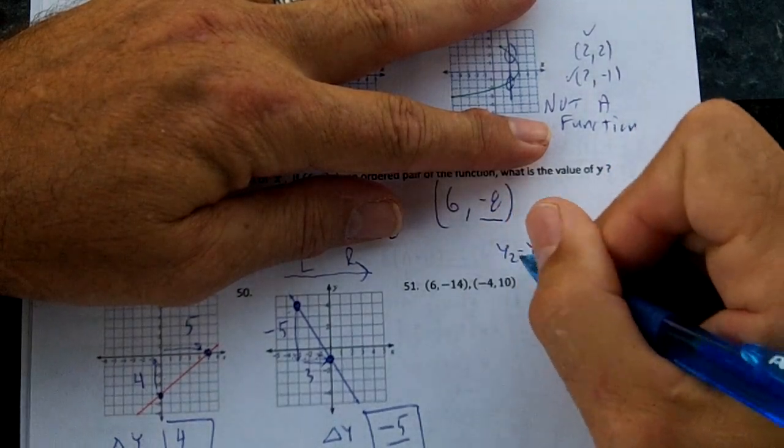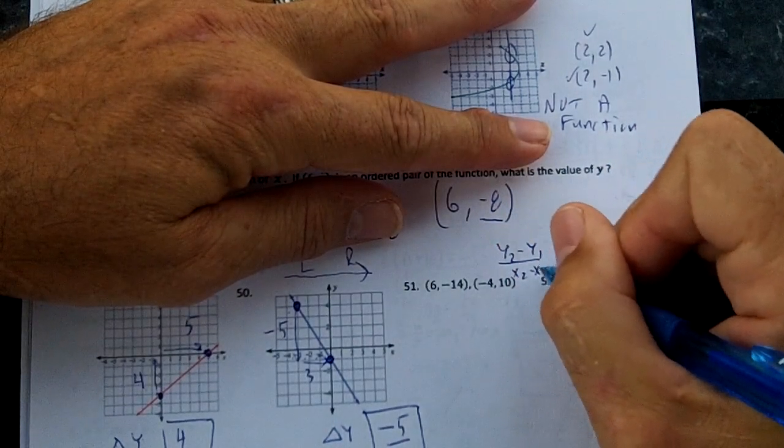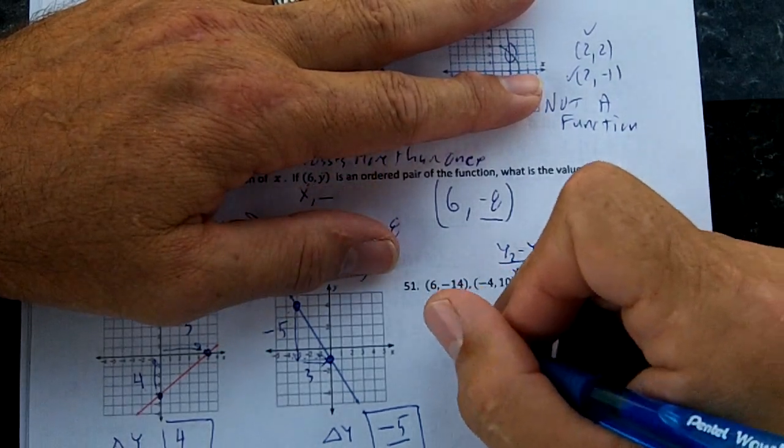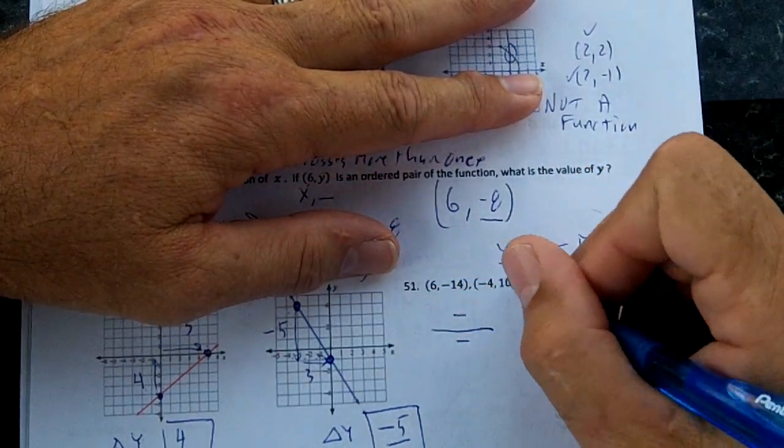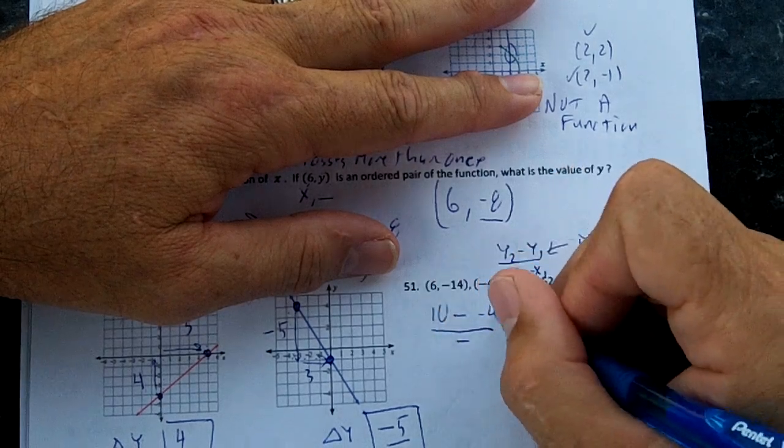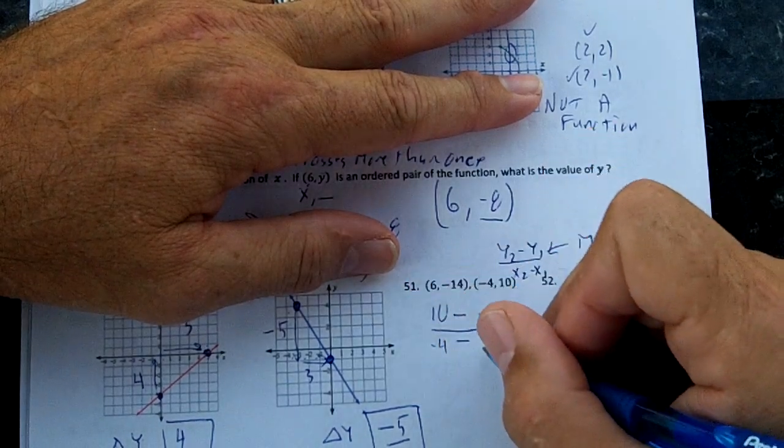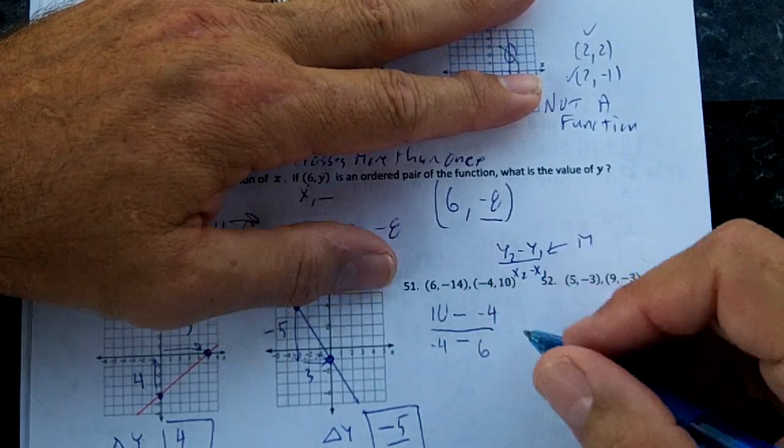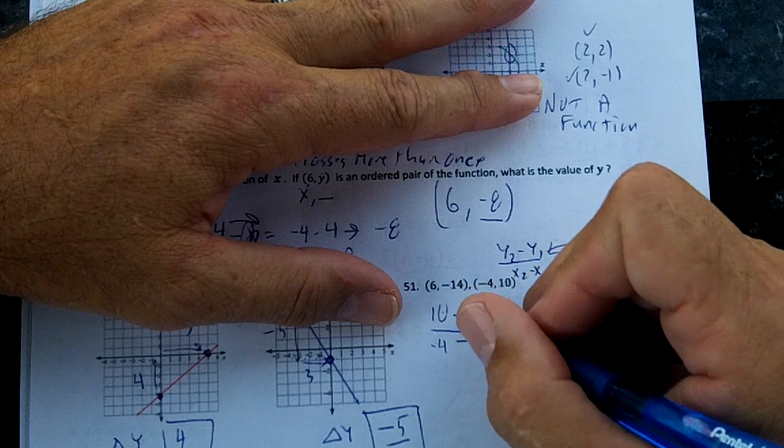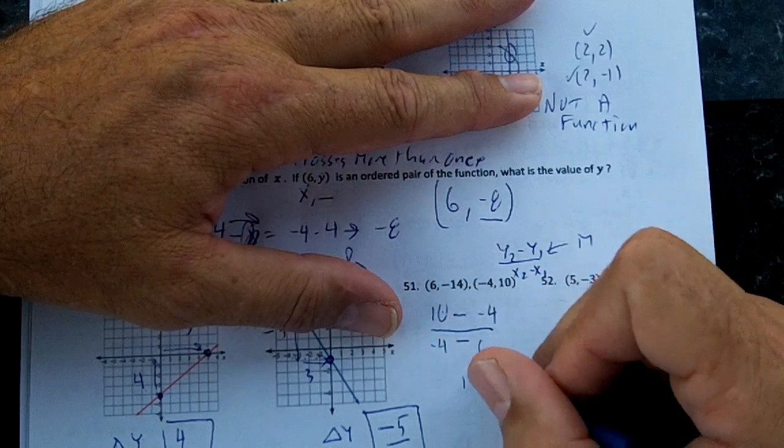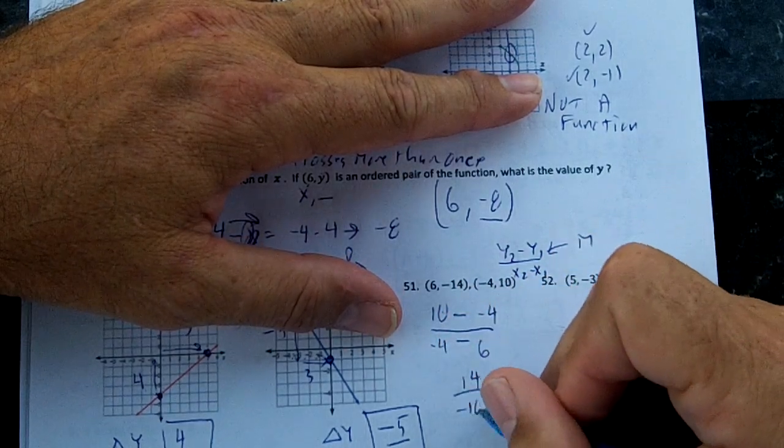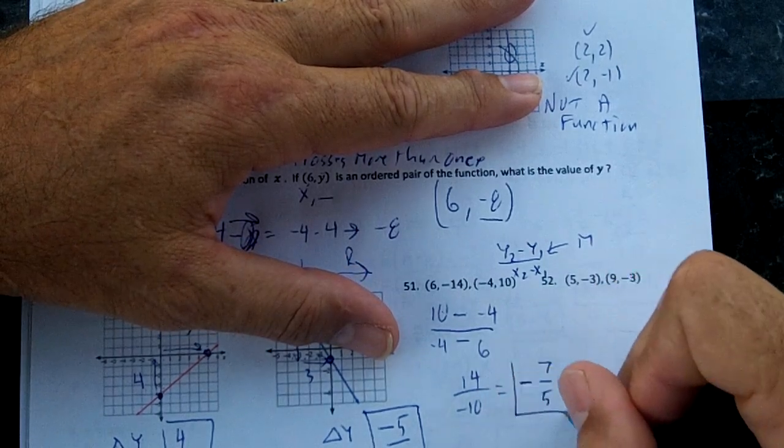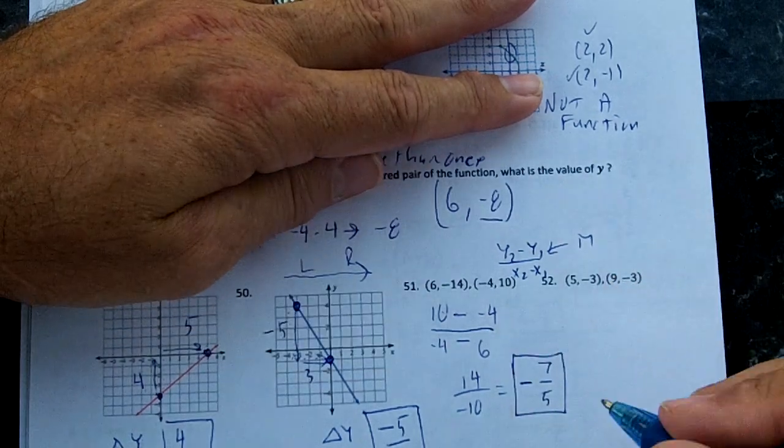Right here we're going to do Y2 minus Y1 over X2 minus X1, which is your slope formula. You did this over and over in 8th grade. So draw a fraction bar. Put two minuses. 10 minus negative 14 over negative 4 minus 6. Your Y2s go here. Your second point goes here. Your first point goes here. 10 minus a negative 14. These two negatives make a plus. 10 plus 14 is 24 over negative 10. And that's going to simplify to negative 7 over 5. Make it a fraction. Don't make it a slope.